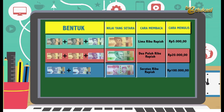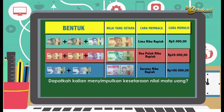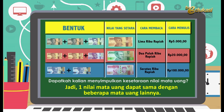Jadi, kalau kalian punya uang 2.000 ditambah 2.000 ditambah 2.000, hasilnya 6.000. Kita tidak punya pecahan yang langsung jumlahnya 6.000, jadi kalian harus menyesuaikan kalau misalkan ingin mendapatkan satu pecahan dari uang yang ada. Dari penjelasan Bapak, dapatkah kalian menyimpulkan tentang kesetaraan nilai mata uang? Jadi, satu nilai mata uang dapat sama dengan beberapa mata uang lainnya, asal jumlah total dari nilainya sama. Seperti tadi, 5.000 bisa kita buat sebagai pecahan 2.000 ditambah pecahan 2.000 ditambah pecahan 1.000. Jelas? Mudah bukan?